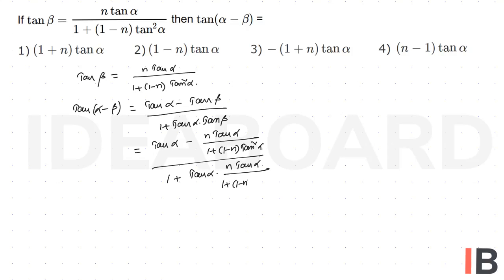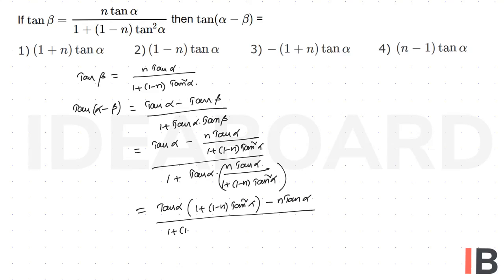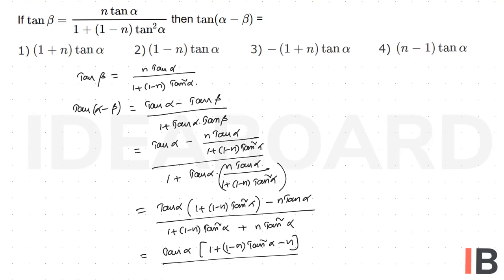Take the LCM and simplify: the numerator becomes tan α·[1 plus (1 minus n)·tan²α] minus n·tan α, all divided by 1 plus (1 minus n)·tan²α plus n·tan²α. That equals tan α·[1 plus (1 minus n)·tan²α minus n·tan²α] divided by 1 plus tan²α.